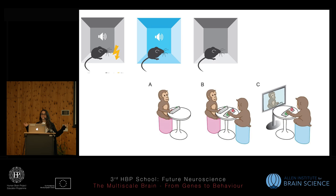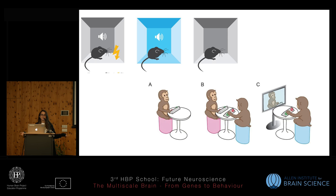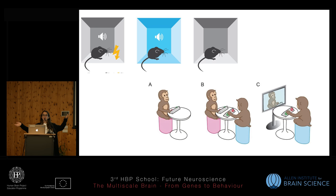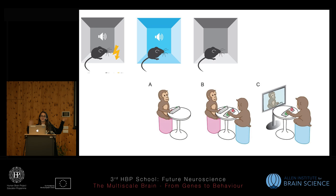So let's say you're an experimentalist. You can be a monkey guy, and let's say you're a nice monkey guy — you don't stick electrodes into it. So you have some learning task, and let's say you have a certain number of tasks and you repeat it over several days, the same task. And you can ask the question: did the monkey succeed on a certain task on a certain day? This can be yes or no.